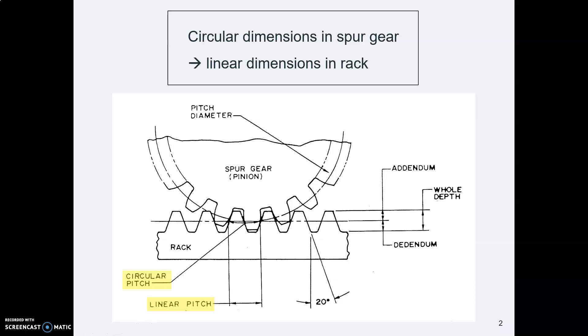There's a spur gear that mates with a rack, and that spur gear we call the pinion. And whatever the dimensions are in the spur gear, the circular dimensions, those same numbers are the linear dimensions in the rack. So for example, here is a pinion mating with a rack. Whatever the circular pitch was, the distance from one tooth to the next tooth to the same place on the next tooth.